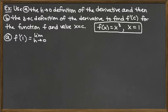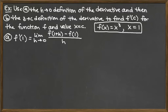The difference quotient involved for this definition is f of the given x value, 1 plus h, minus f of the given x value, which is 1, all over h. So we need to be able to compute f of 1 plus h and f of 1 as our next step.